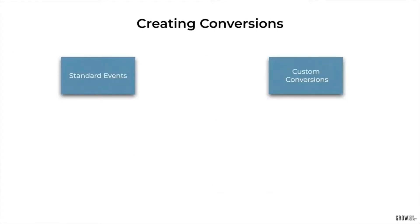Conversions come in two shapes and sizes. The first is standard events. If you're an e-commerce company or work with one, when you integrate your pixel, it'll automatically create standard events such as Add to Cart and Purchase. We often use custom conversions for our clients, as this allows us to track a number of elements of the campaign. Setting one up is easy — you just need to feed Facebook the URLs that correspond to the event. For example, tell Facebook that once a user reaches the thank-you page after downloading a free guide, they have completed a conversion.